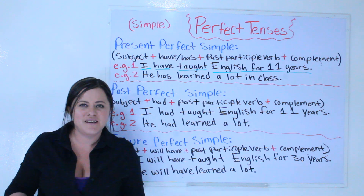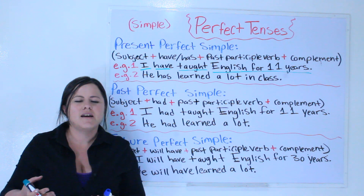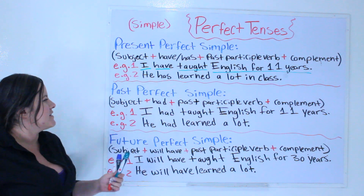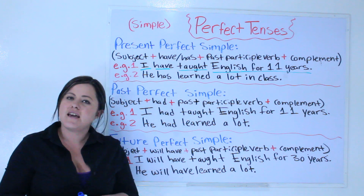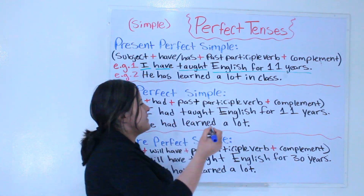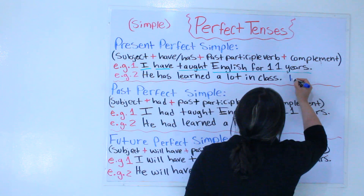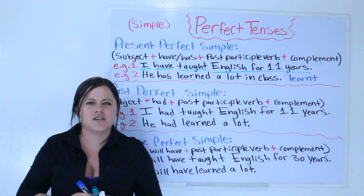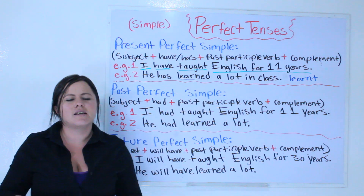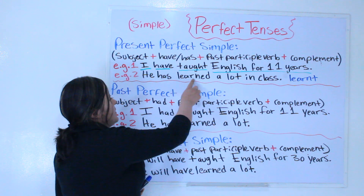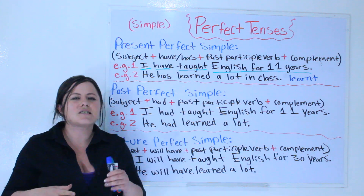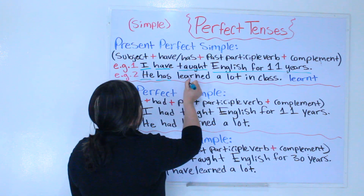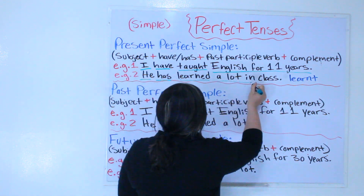This is not a math lesson, but I want to show you the correct order everything goes in. The next example is: he has learned a lot in this class. Now this verb 'learned' could also be spelled differently — that is British English. In American English, 'learn' is a regular verb, so we write it 'learned.' So we have: subject he, has, past participle verb learned, and complement.